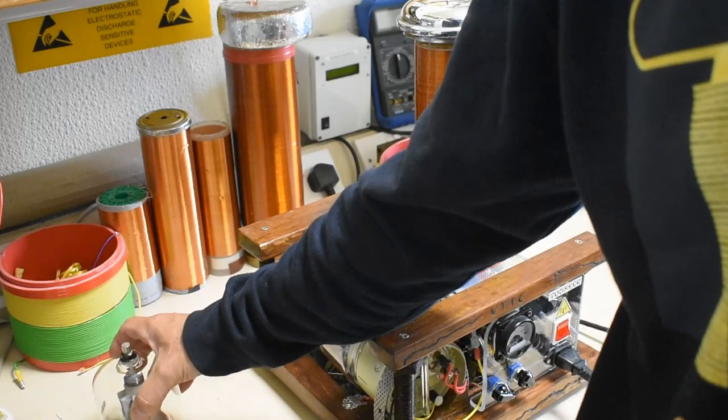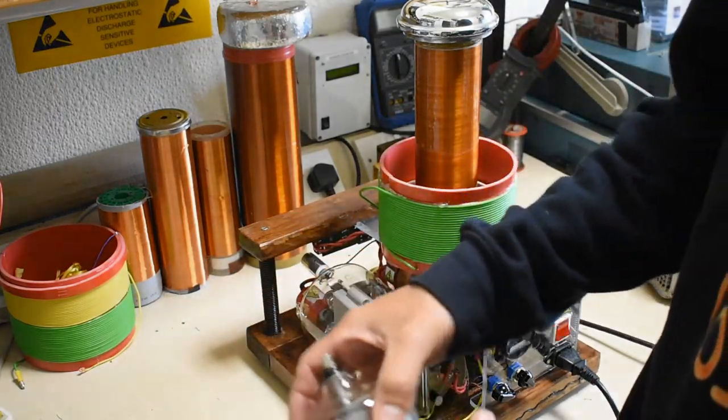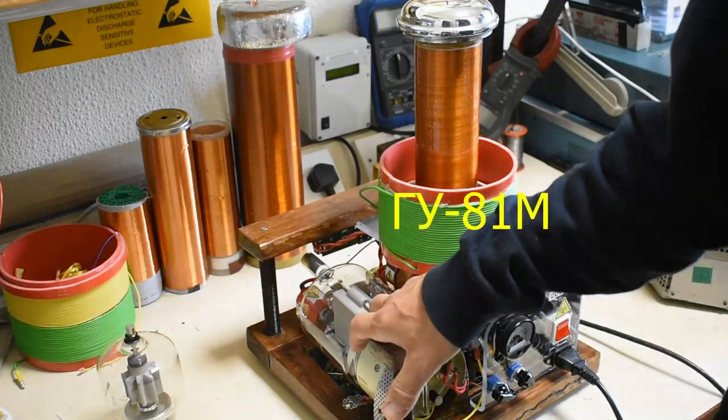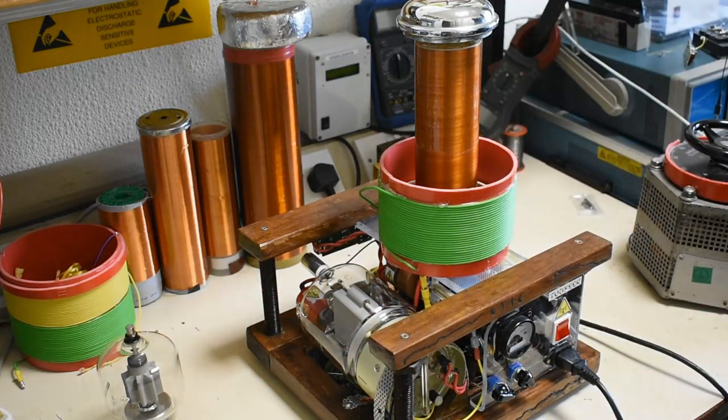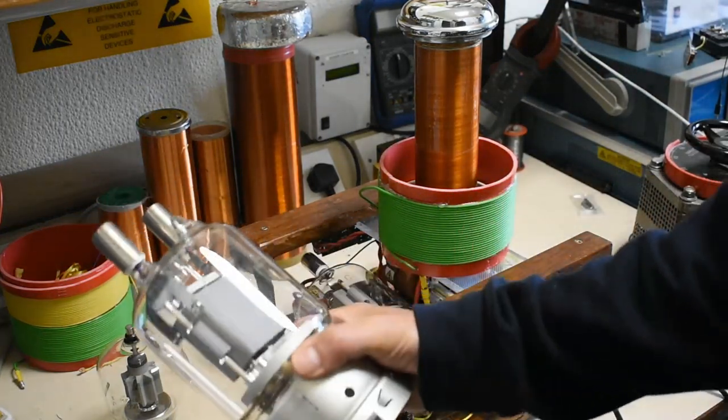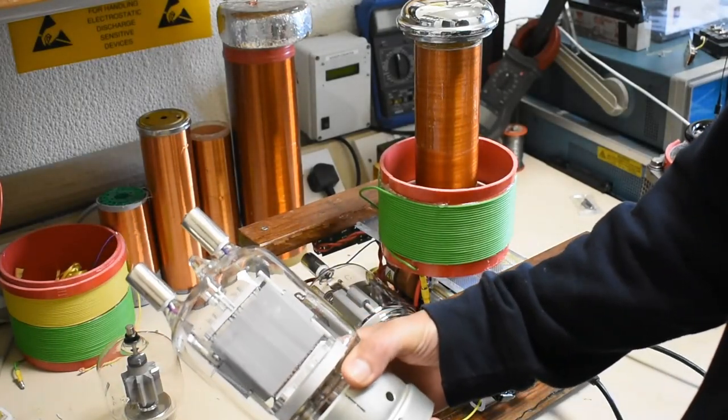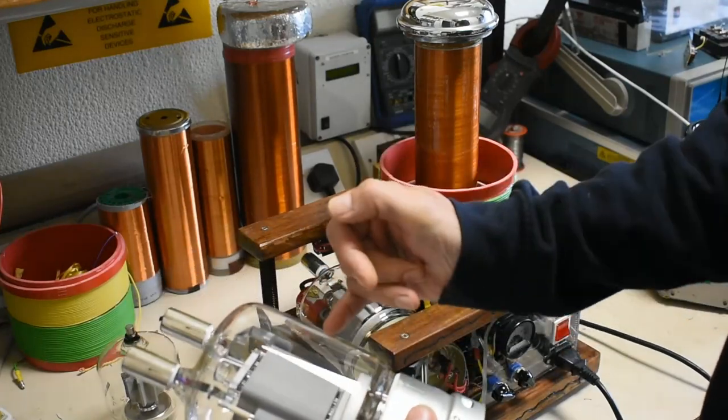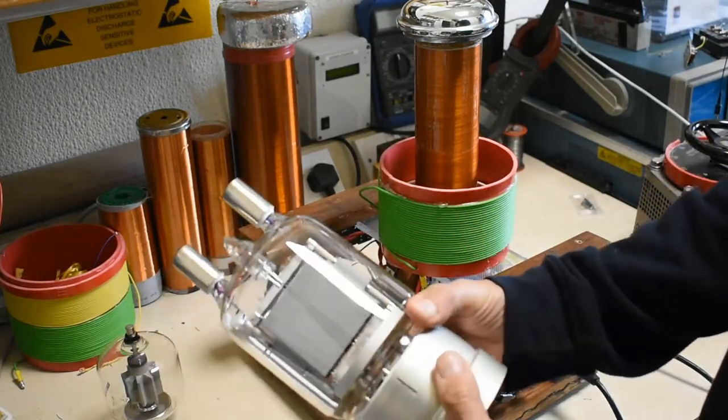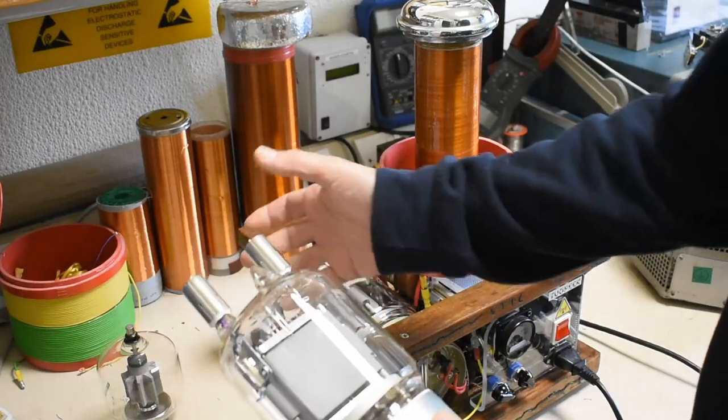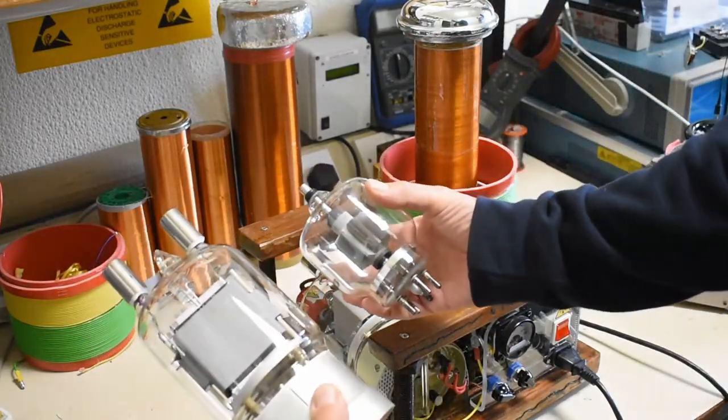But I was so impressed with the size of the Russian GU81 that I felt it was obviously worth it. This is quite a commonly used tube on valve Tesla coils. Again, a graphite anode, but a much larger valve physically. If you see the two side by side,